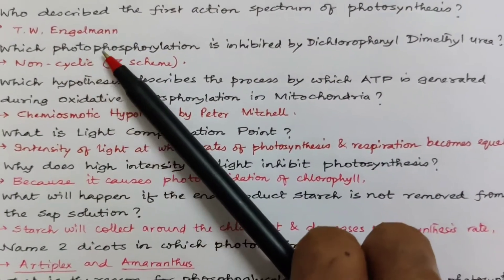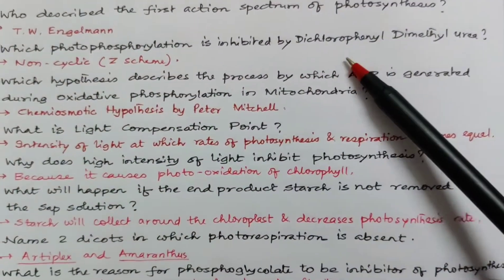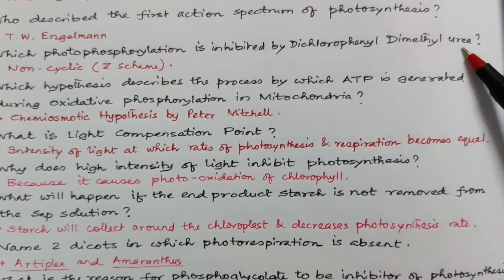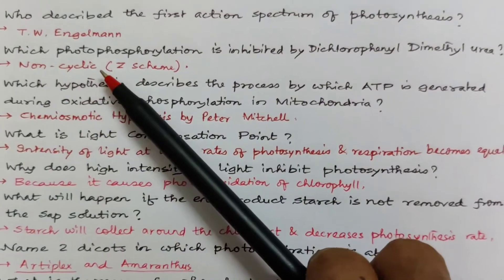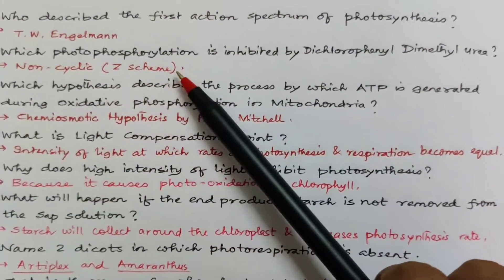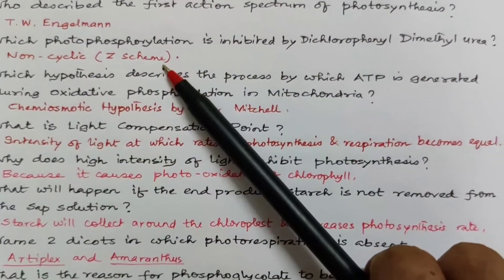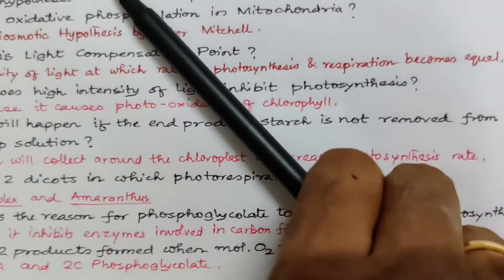Which photophosphorylation is inhibited by dichlorophenyl dimethyl urea that is DCMU? It is non-cyclic or known as Z scheme also because it appears like Z, the letter Z.